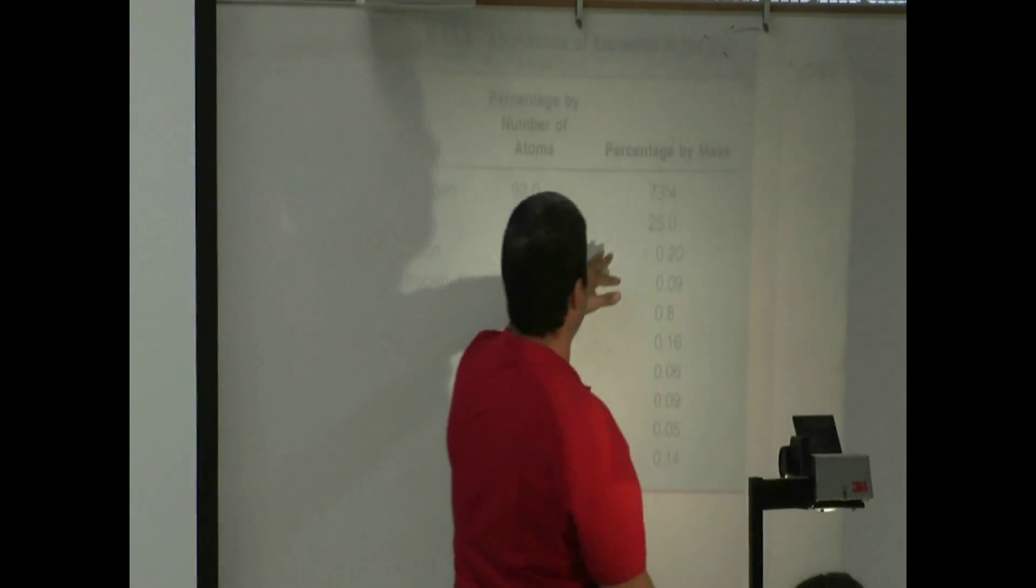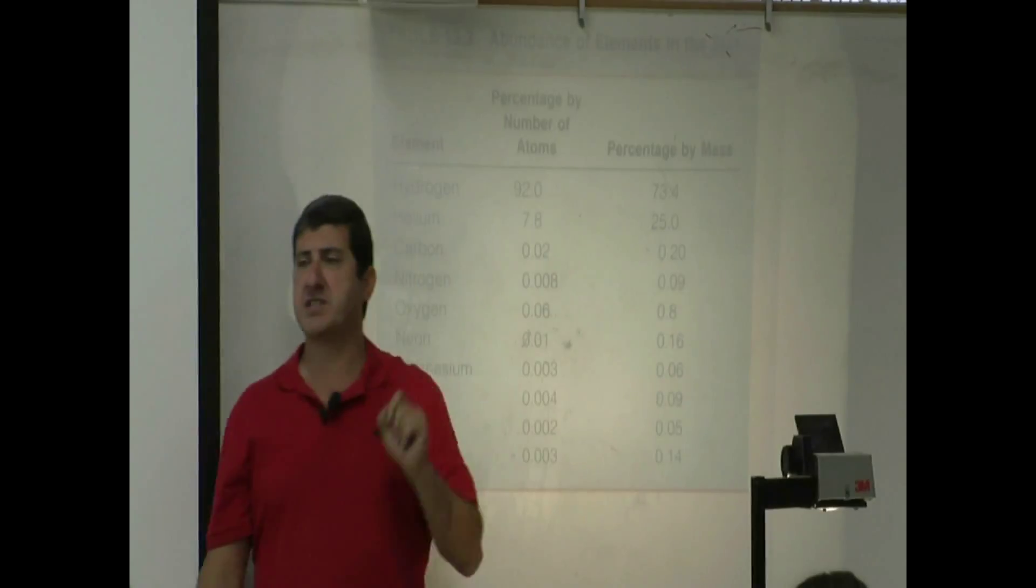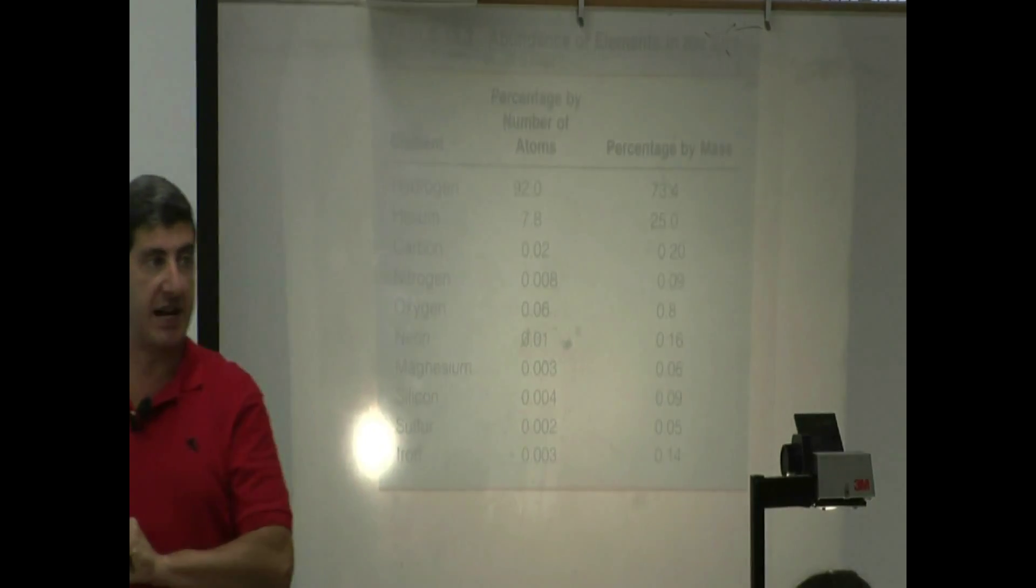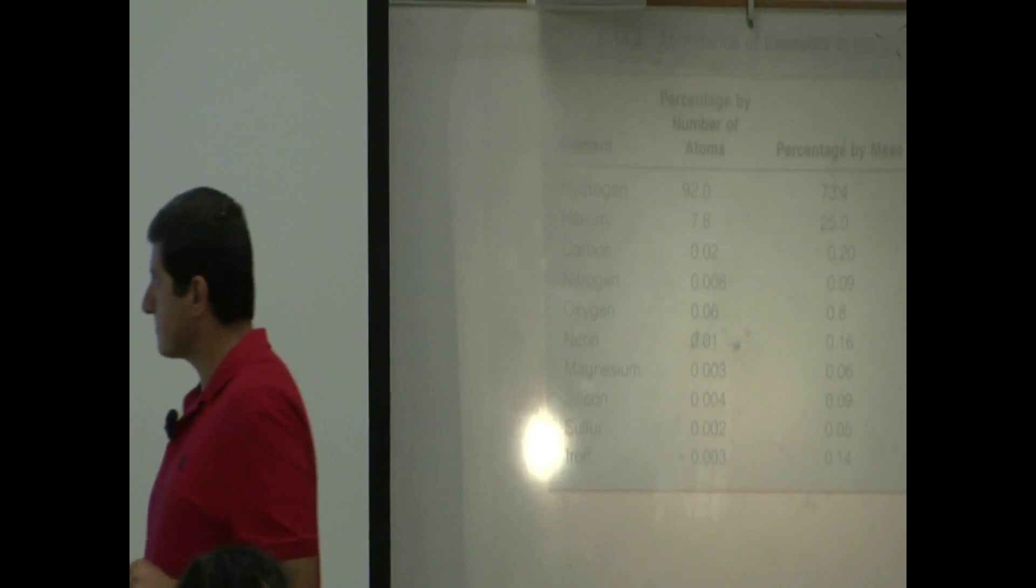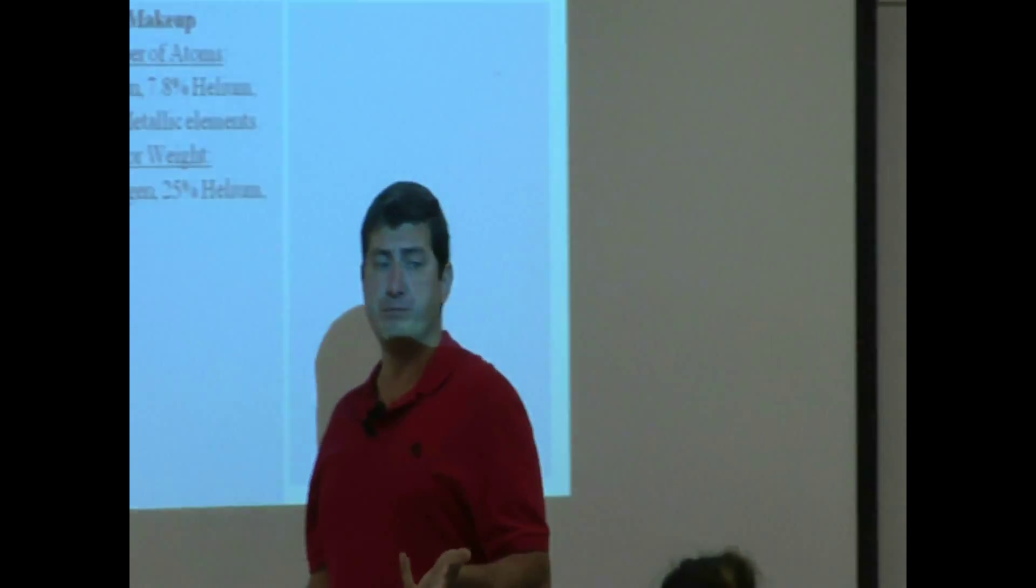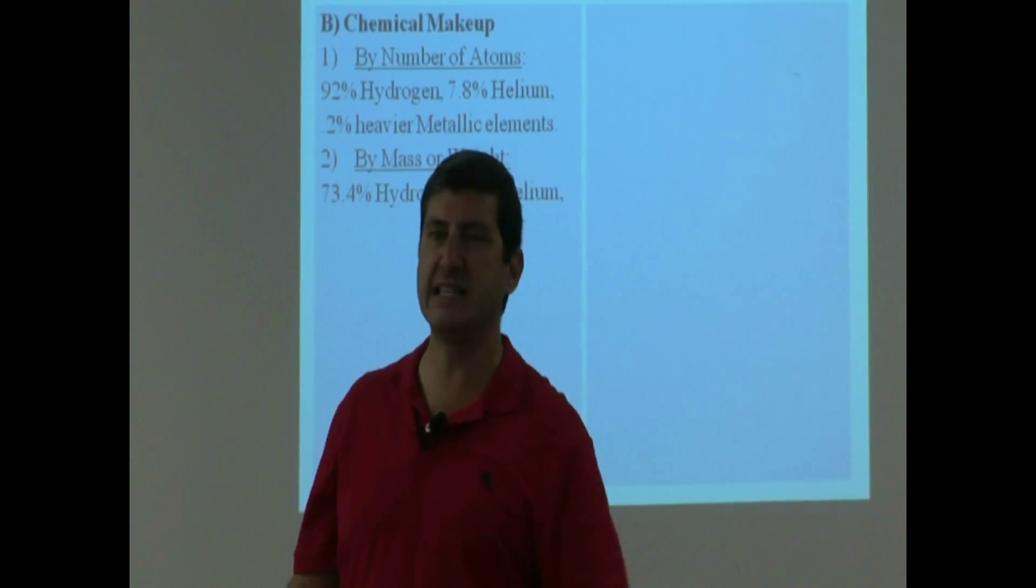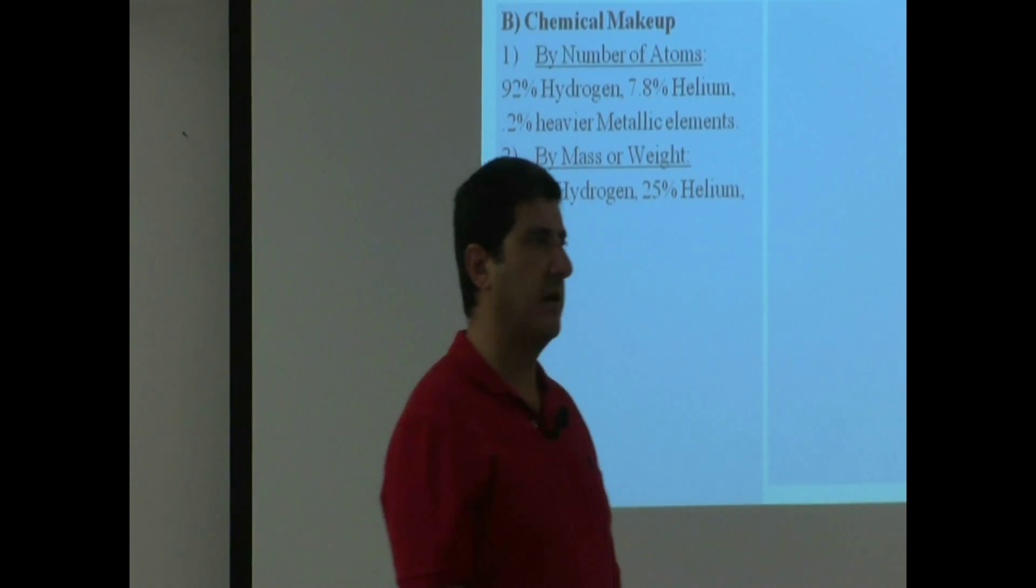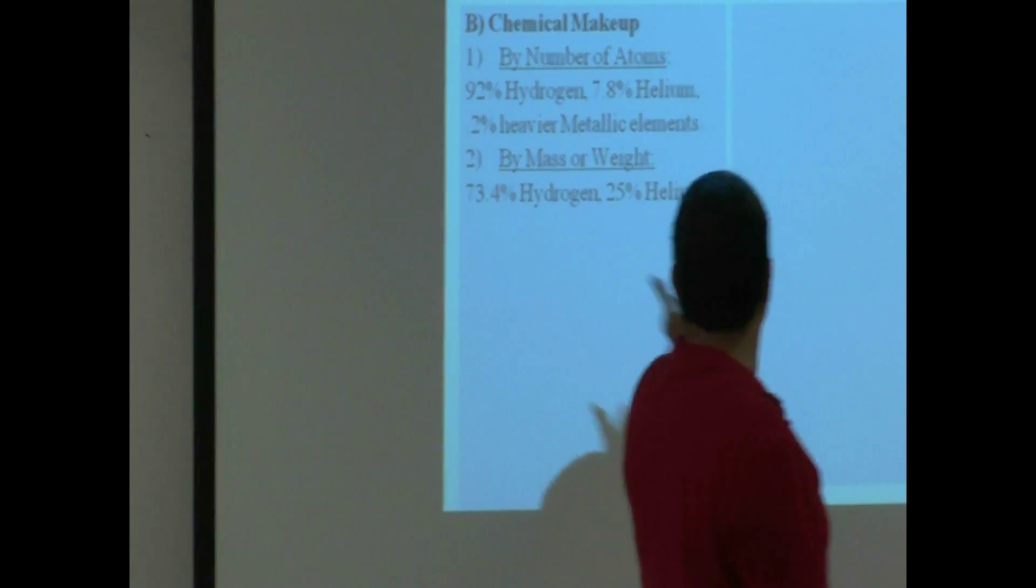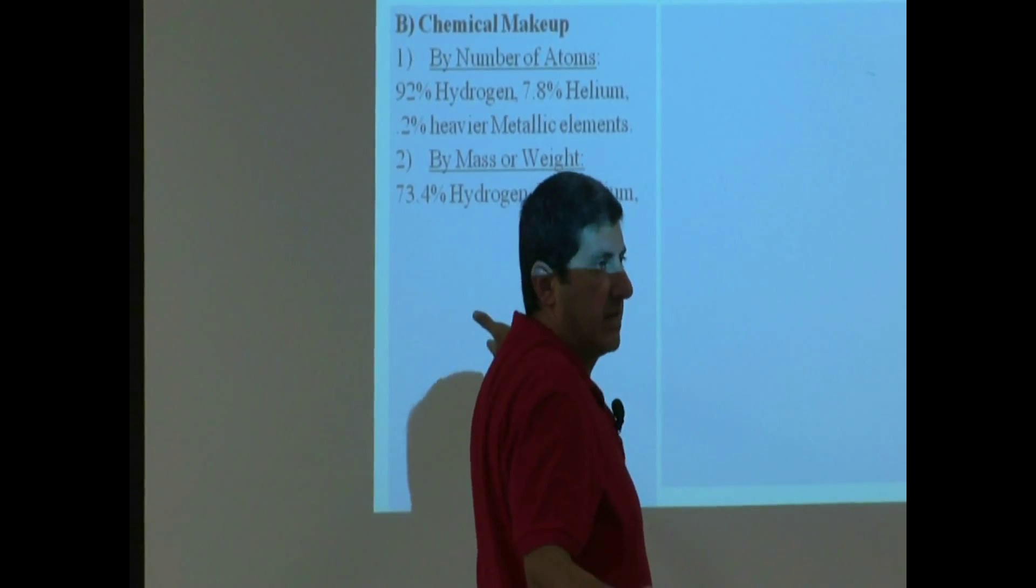Now if you also break it down by mass and you say what percentage of the mass of the sun is hydrogen, it's only 73%. Why? Because hydrogen is the lightest element. So even though it comprises 92% of the sun, by weight it's only 73%, the lightest element.